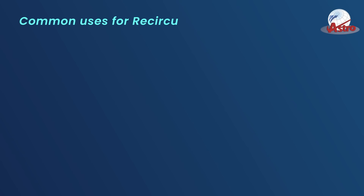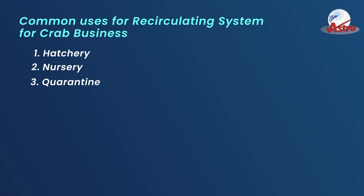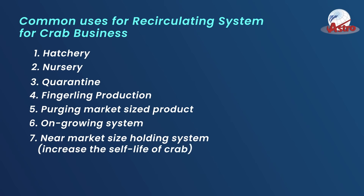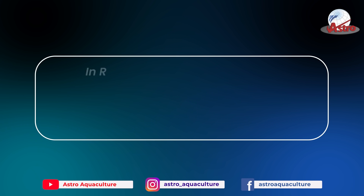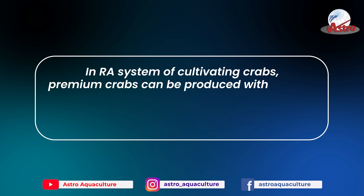Common uses for recirculating systems for crab business include: hatchery, nursery, quarantine, fingerling production, purging market-sized product, on-growing systems, and near market-size holding systems to increase the shelf life of crab. Crab fattening is also a key application in recirculating aquaculture systems.